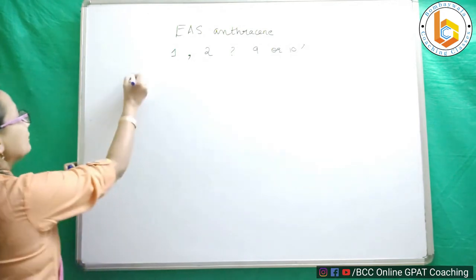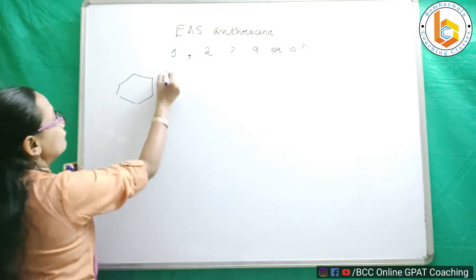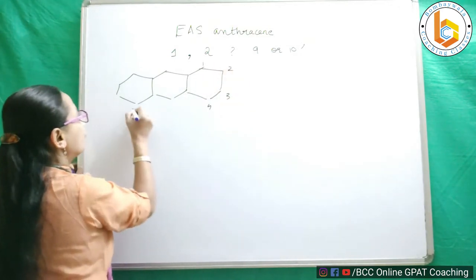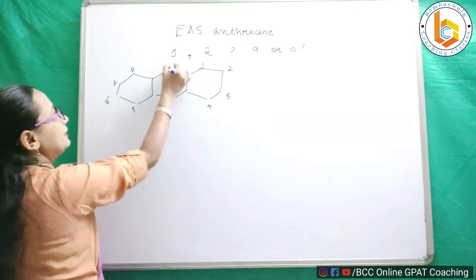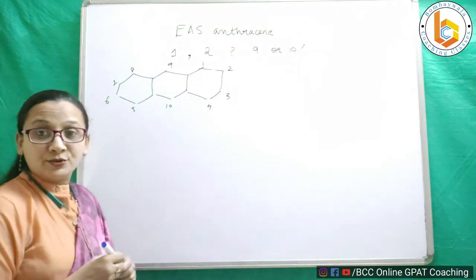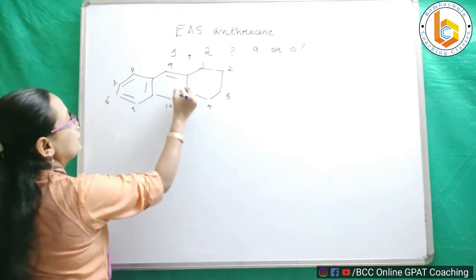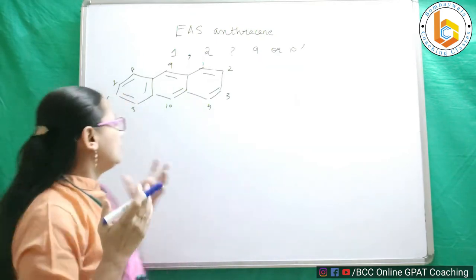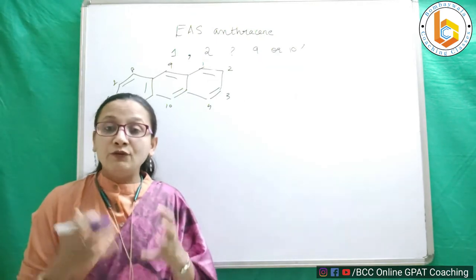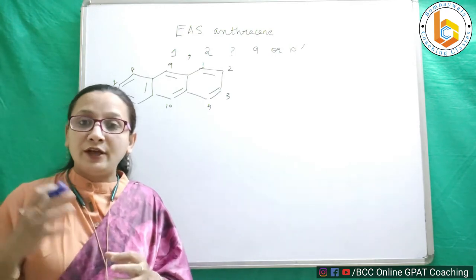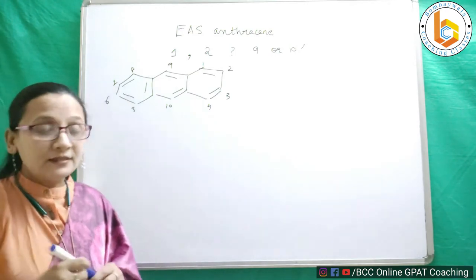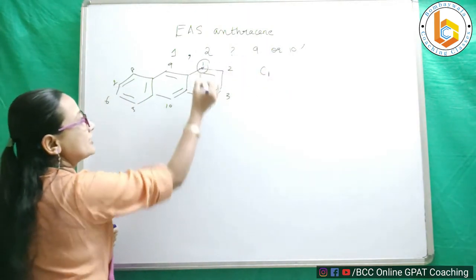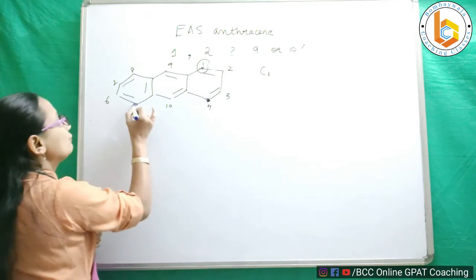If I look at anthracene, I have numbered it as 1, 2, 3, 4, 5, 6, 7, 8, 9, and 10. There are 10 different types of carbons. Now, C1 is exactly the same position as 4, 5, and 8 due to symmetry.